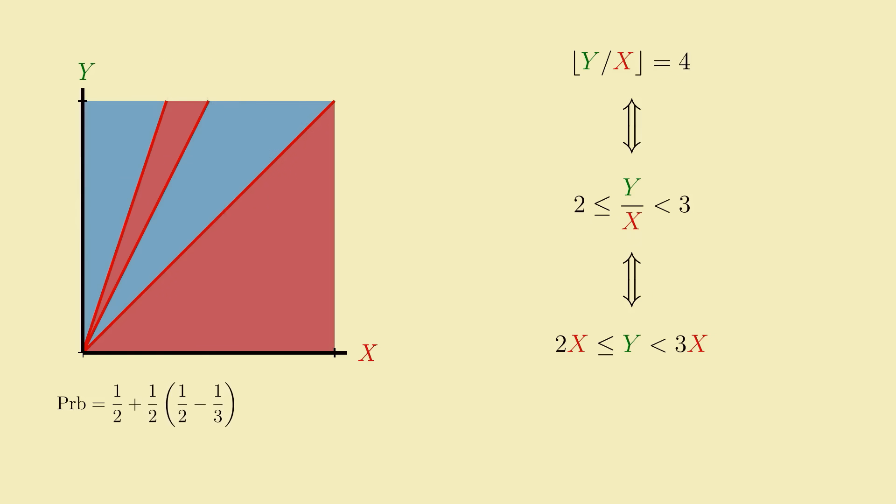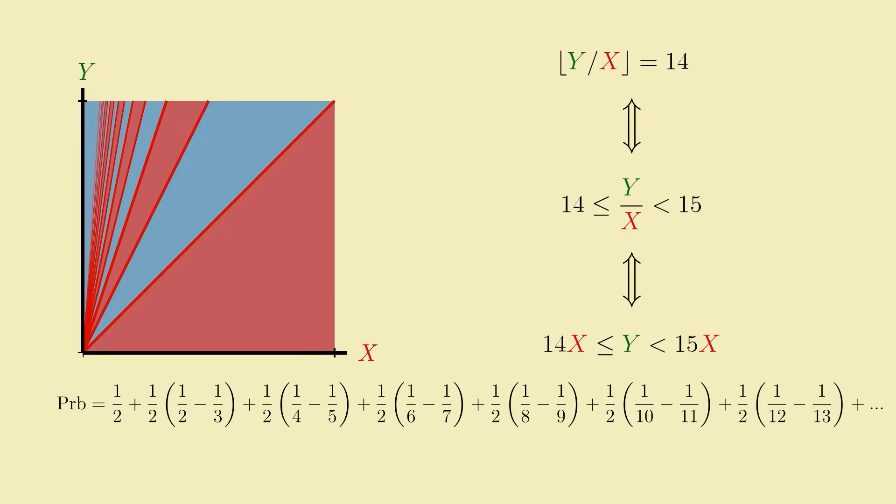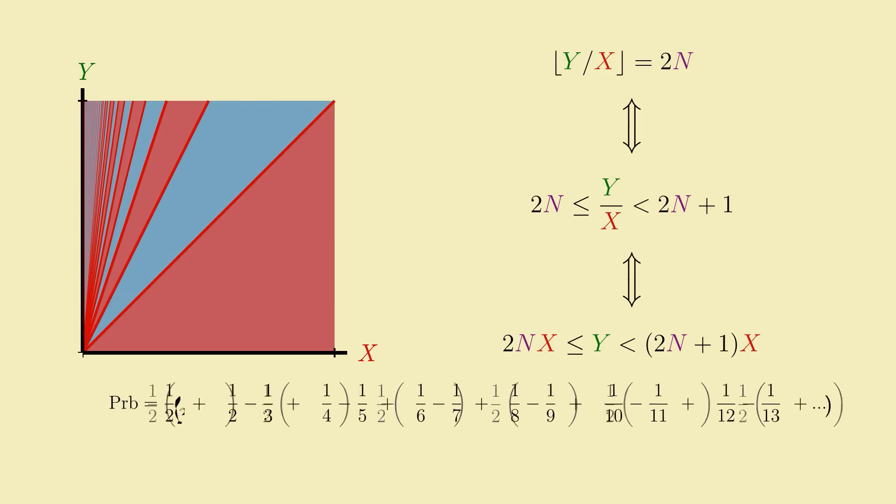From here, the pattern continues how you'd think. Getting a ratio that floors to 4 corresponds to the triangle between y equals 4x and y equals 5x with area half of 1 fourth minus 1 fifth. The next triangle will have area half of 1 sixth minus 1 seventh, and so on. An alternating half sum of all the reciprocal natural numbers. Pulling out the common factor of 1 half from every term, we can simplify it a little to this.